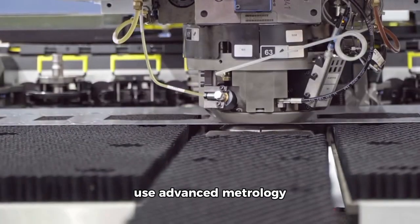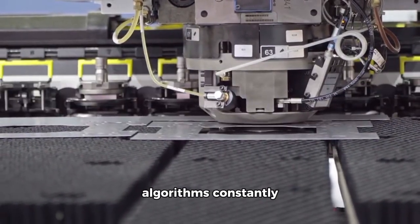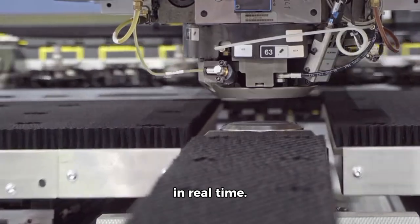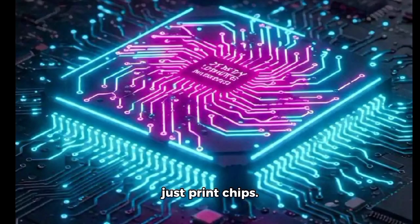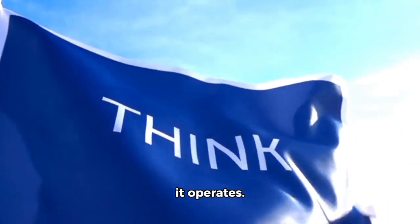This is why EUV machines use advanced metrology systems, sensors and AI algorithms constantly correcting positioning in real time. The machine doesn't just print chips. It thinks, adjusts, and self-corrects as it operates.